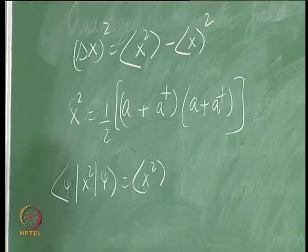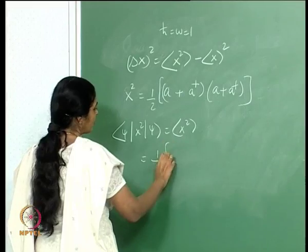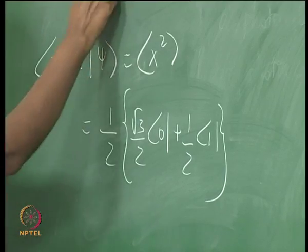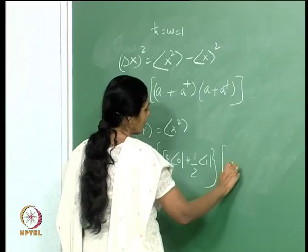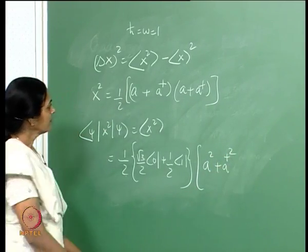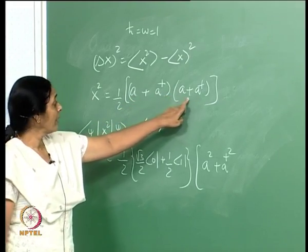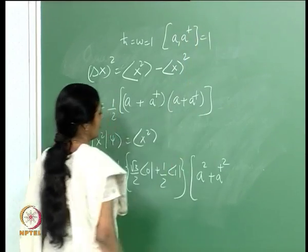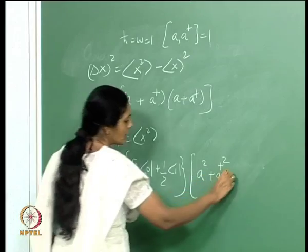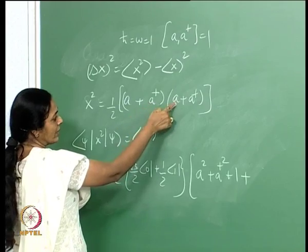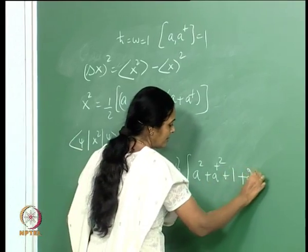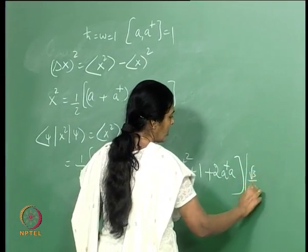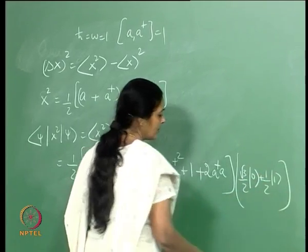Setting h-cross and omega equal to 1 for convenience, x squared is essentially (a plus a dagger) squared times a half. I need psi x squared psi, which is the expectation value of x squared. Expanding out this operator gives a squared plus a dagger squared plus a a dagger plus a dagger a. Using the commutation relation, a a dagger equals 1 plus a dagger a, so this gives 1 plus 2 a dagger a. On the other side I have root 3 over 2 ket 0 plus half ket 1.